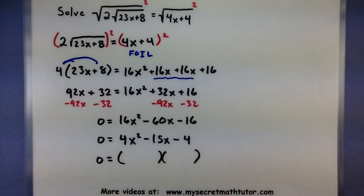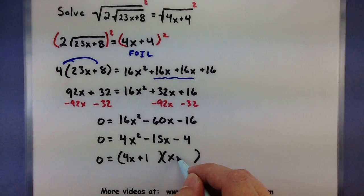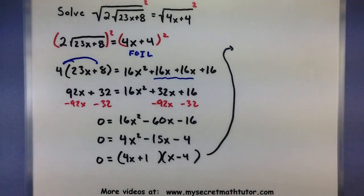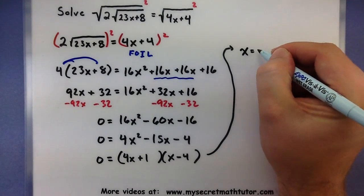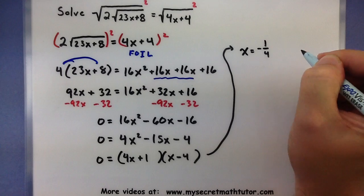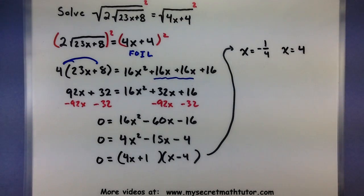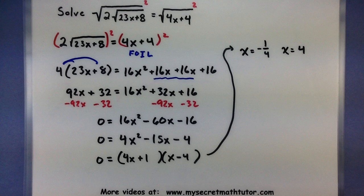That way, we can save lots of time. So, this factors into 4x, plus 1, and x, minus 4. And from here, we get two possible solutions. So, x could equal a negative 1 fourth, or x could equal a positive 4. It's a lot of work just to get to this step. But remember, we have to check these two solutions to make sure they really do work out.